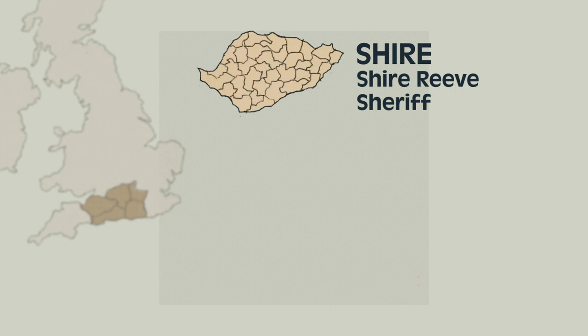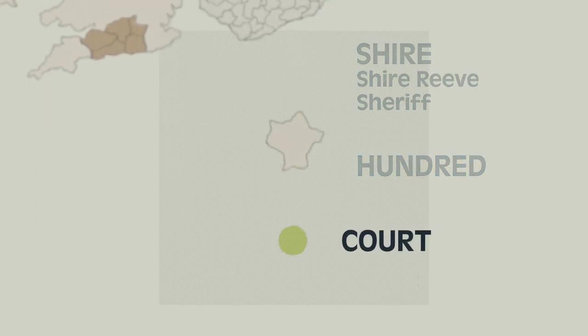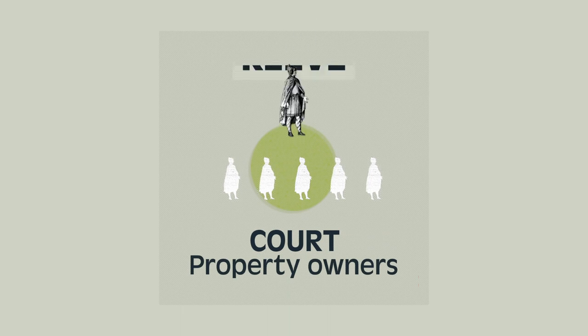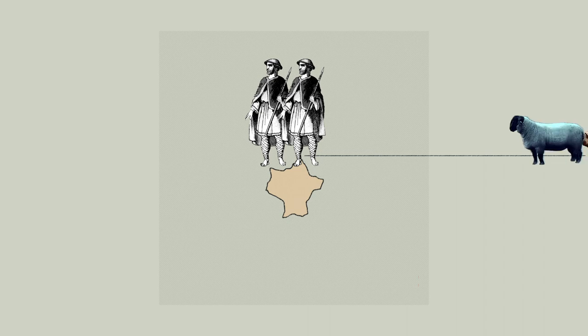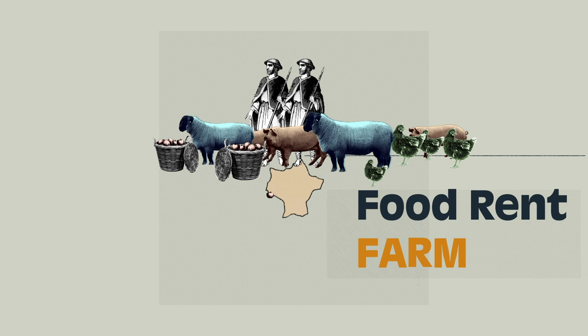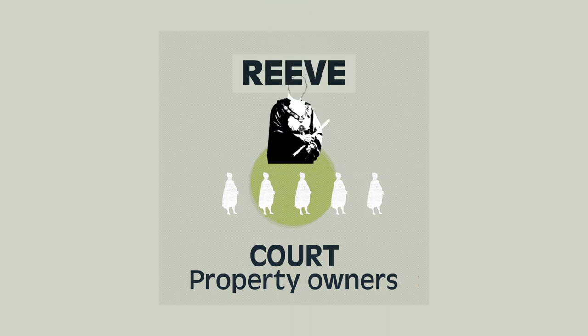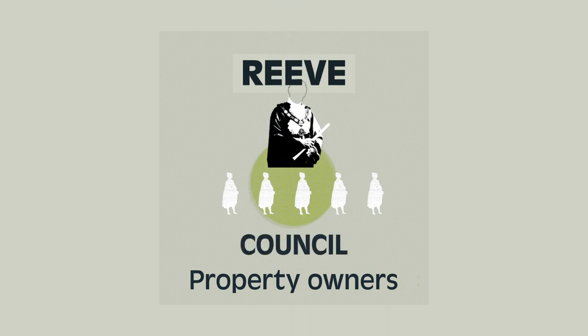Each shire was divided into hundreds — an area of 100 households. Each hundred had a court of property owners that met monthly. Each hundred court had a reeve to implement the court's decisions. Two knights of each hundred were called by the sheriff annually to set the farm, or food rent, from which our word comes. As population grew and towns evolved, so did the governance model. Our municipal governments come from the hundred court: a reeve with a council of property owners.